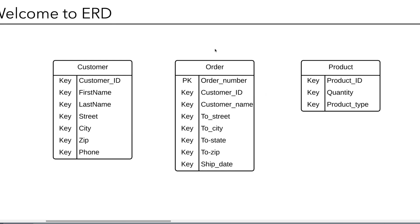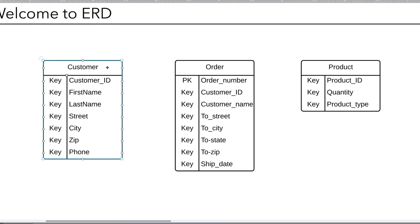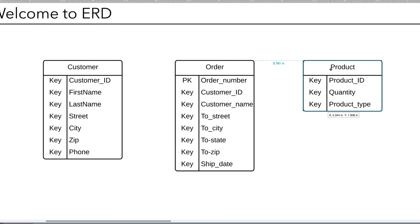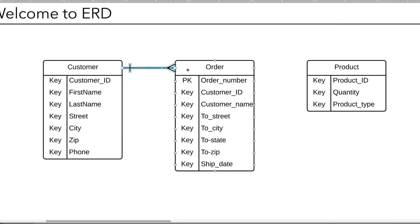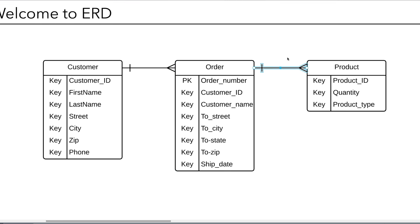Now we have the different entities and attributes on the screen. Let's talk about the relationships that exist between these different entities. Relationships describe how these entities will interact with each other — if at all — and you show that by drawing a line in between them. By drawing a line between these particular elements, I'm showing that there is some sort of interaction or connection.